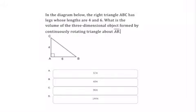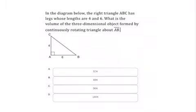In this diagram below, the right triangle ABC has legs whose lengths are 4 and 6. What is the volume of the three-dimensional object formed by continuously rotating the triangle about AB?